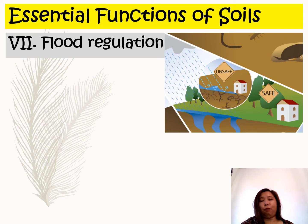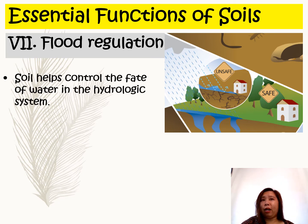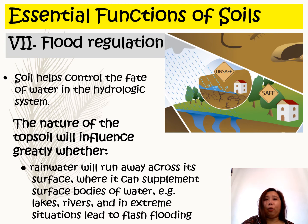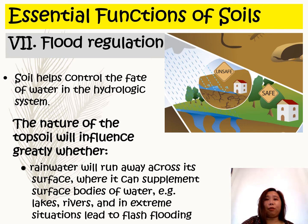Another function is flood regulation. The soil helps control the fate of water in the hydrologic cycle. The nature of the topsoil greatly influences whether rainwater will run off across its surface, where it can supplement surface bodies of water such as lakes and rivers, or in extreme situations lead to flash flooding — especially in soils prone to waterlogging.